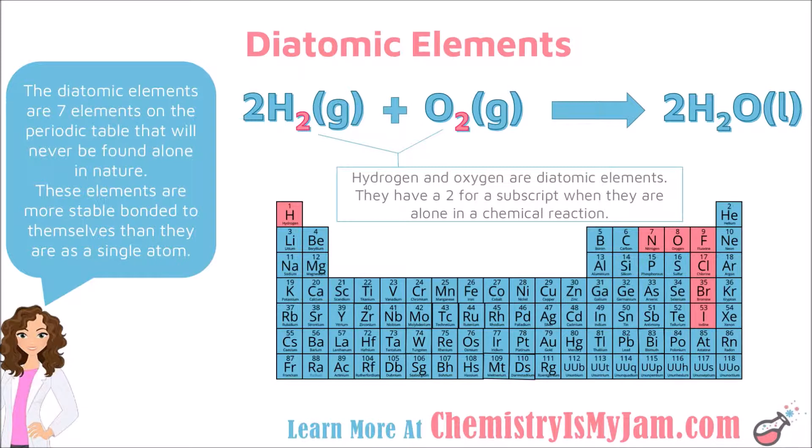There are seven diatomic elements. They are hydrogen, nitrogen, oxygen, fluorine, chlorine, bromine, and iodine.